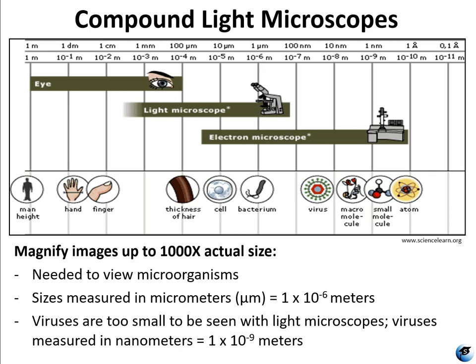Compound light microscopes — the ones in our lab anyway — magnify images up to a thousand times their actual size. Microscopes are needed to view microorganisms that are measured in micrometers, that is one times ten to the negative six meters. Viruses can be way smaller than that by three orders of magnitude, so they are measured in nanometers. Here is a figure that illustrates the limits of what you can see with the human eye, with the light microscope, and with the electron microscope.